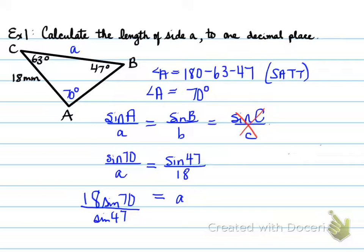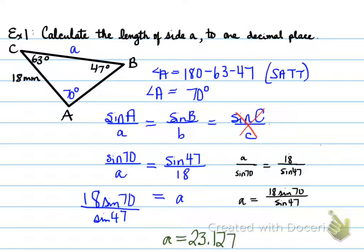Some of you might be wondering, what if I want to use the formula the other way? A over sine 70 equals 18 over sine 47. Your answer will be 23.1276 meters. We're going to reduce it to one decimal place. Our final answer is 23.1 millimeters. Let's keep moving forwards.